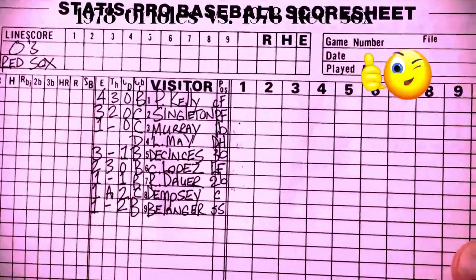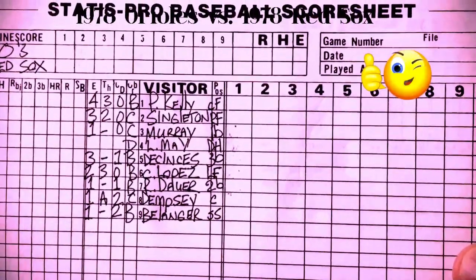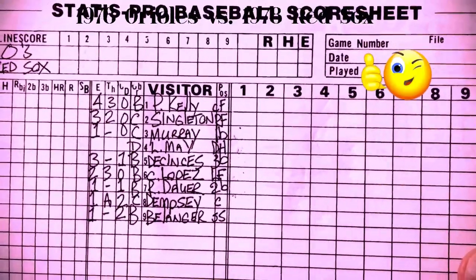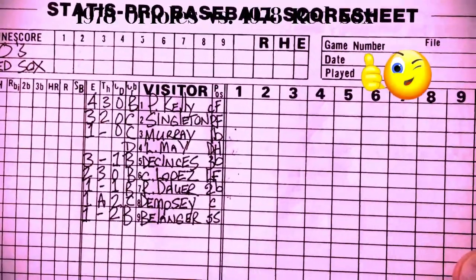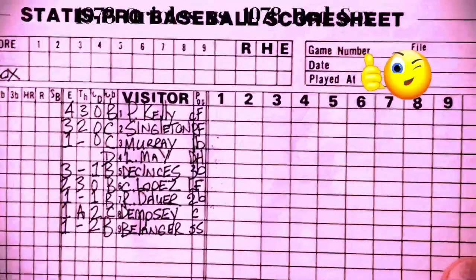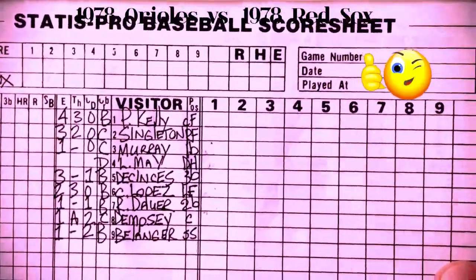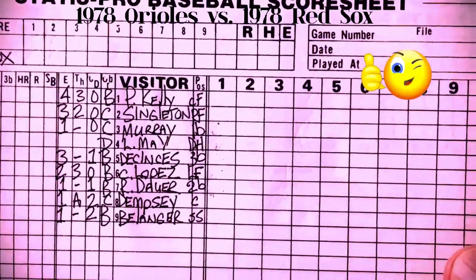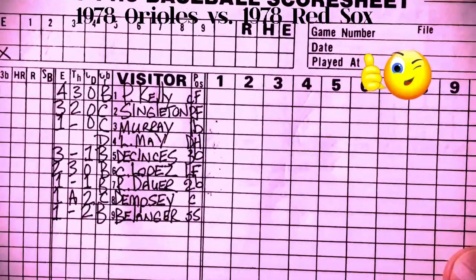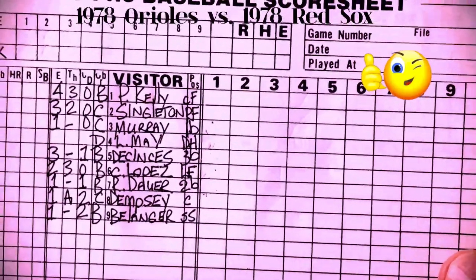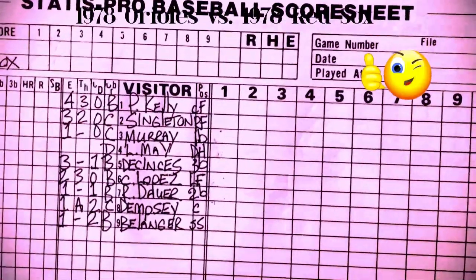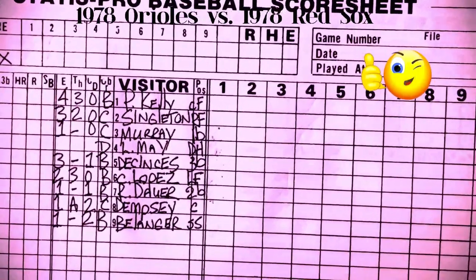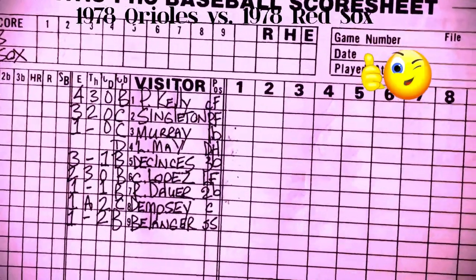You've got Pat Kelly leading off for the Orioles, who will be the visiting team, playing center field. Then Singleton is in right field, Eddie Murray at first, and Lee May at DH. Doug DeCinces at third, Carlos Lopez in left, Rich Dauer at second, Dempsey at catcher, and Belanger at shortstop. You can see their ratings as well.